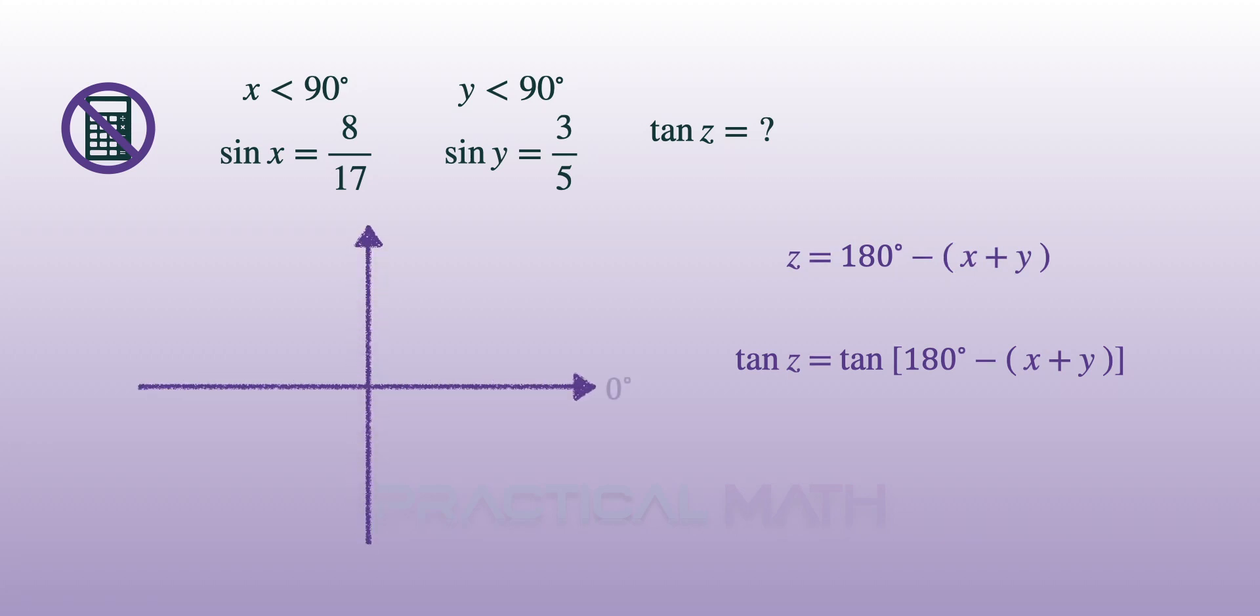Using the trigonometric ratios of general angles in the four quadrants (ASTC), the angle is now in the second quadrant where only sine is positive. Therefore, tangent must be negative in the second quadrant, and we can simplify tan Z to -tan(X + Y).